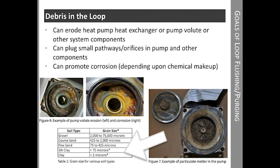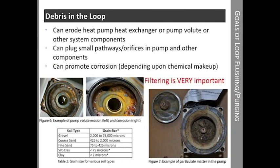Debris can be very fine. As you can see from the chart, fine sand, silt, and clay can be less than 100 microns. In fact, clay can be as small as 2 microns. When flushing the system, we typically use a 100 micron filter, which catches larger particles. However, once the system is purged of air, additional filtering may be required. GeoFlow offers a 1 micron filter for additional removal of smaller particles. The 1 micron filter should not be used when purging air due to the high restriction. However, once air is purged from the system, it's a good idea to do some additional filtering with the 1 micron filter.